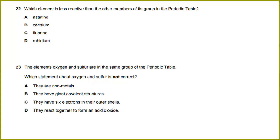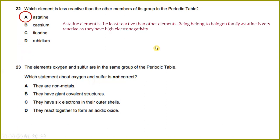Which element is less reactive than other members of its group in the periodic table? Astatine is the least reactive element. It belongs to the halogen family. Astatine is very reactive as they have high electronegativity. The elements oxygen and sulfur are in the same group of the periodic table. Which statement about oxygen and sulfur is not correct? They have giant covalent structure. This is not correct. Giant covalent structure is referring to diamond and graphite.